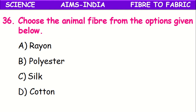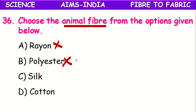Choose the animal fiber from the options given below. Out of rayon, polyester, silk, and cotton — rayon and polyester are artificial man-made fibers. Silk and cotton are natural fibers, but out of these, silk is the animal fiber — because silk is obtained from the silk moth. Cotton is a plant fiber. So silk fiber is the animal fiber.